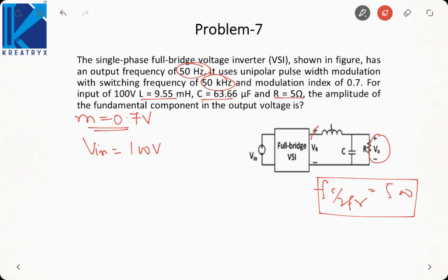First of all, what is the amplitude of fundamental in VR? As I told you in unipolar PWM, the fundamental amplitude at the inverter output is VR1, that is M into VIN, that is 70 volt, 0.7 into 100. But now this is across VR. We need to find it across V0. It is fundamental component. So its frequency will be 50 Hertz. And for any sinusoidal input or for any sinusoidal quantity, inductances and capacitances are replaced by impedances.